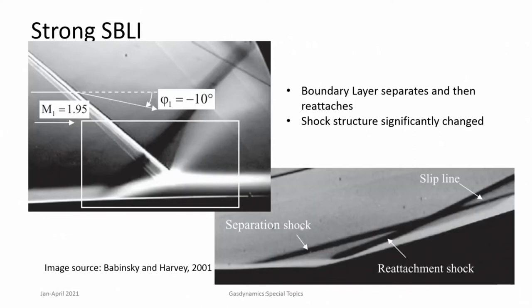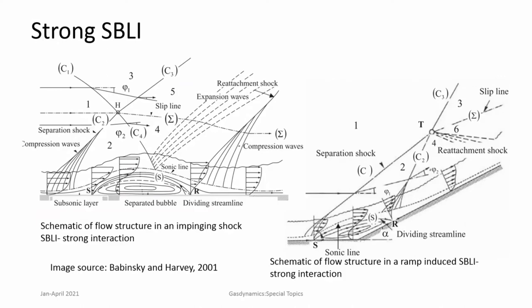In case of strong shock wave boundary layer interactions, the boundary layer separates and may reattach. The shock structure is significantly changed — quite different from what we expect in an inviscid flow. These are the cases for an impinging shock where the boundary layer simply separates. For a corner flow, there is separation and a separation shock is formed much ahead of the corner, and a reattachment shock is also formed.